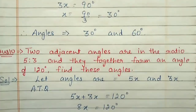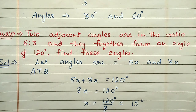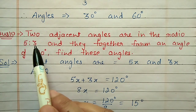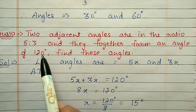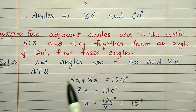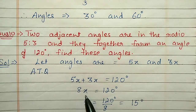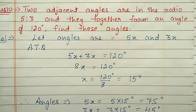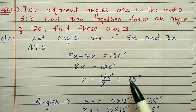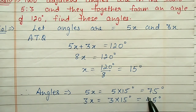Question number ten: two adjacent angles are in the ratio 5:3 and together form an angle of 120 degrees. Let the angles be 5x and 3x. Their sum is 120 degrees, so 5x + 3x = 8x = 120, giving x = 15 degrees. The first angle is 5 × 15 = 75 degrees and the second angle is 3 × 15 = 45 degrees.